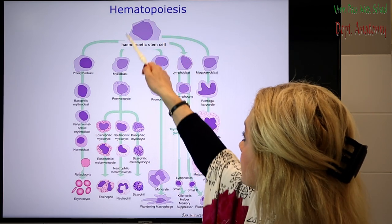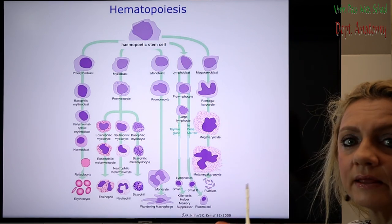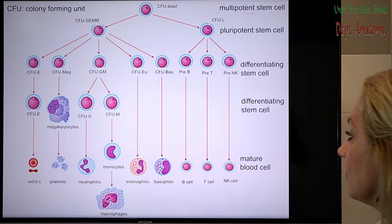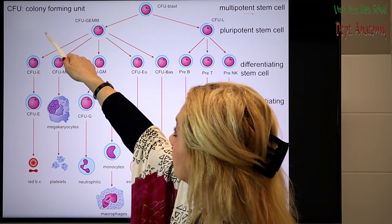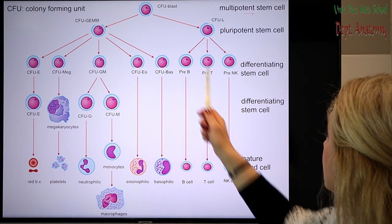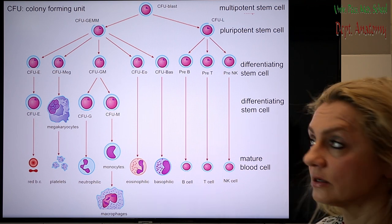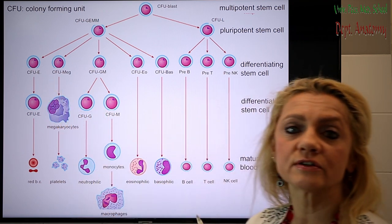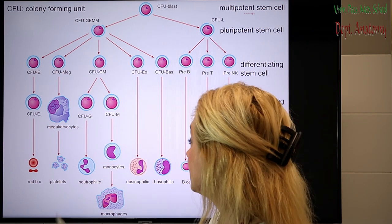We start with one stem cell, which then divides into different lines that are already committed to become one cell type. One colony is called a colony forming unit — one type of cell which becomes committed to one line. First, the colony is called the multipotent stem cell, which can develop into any other cell, and later it will be specialized or differentiated. The CFU always refers to the colony forming unit: with E it means erythrocyte, meg means megakaryocyte/platelet, etc.